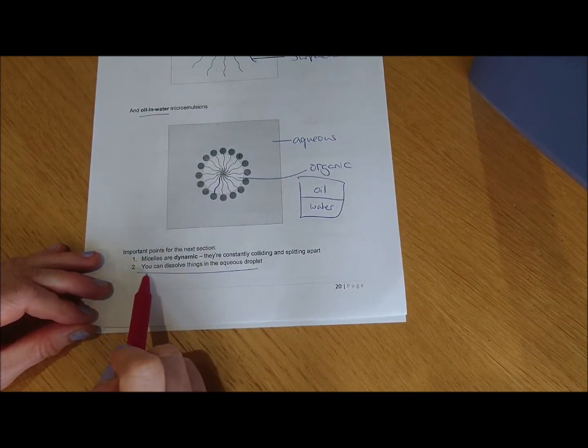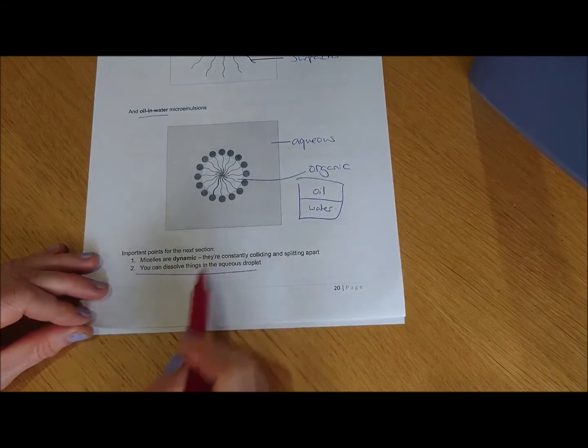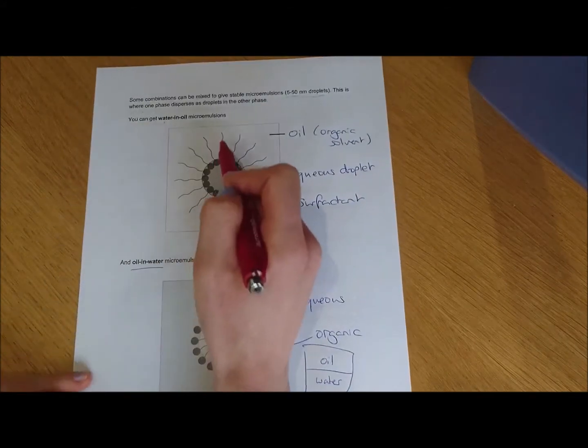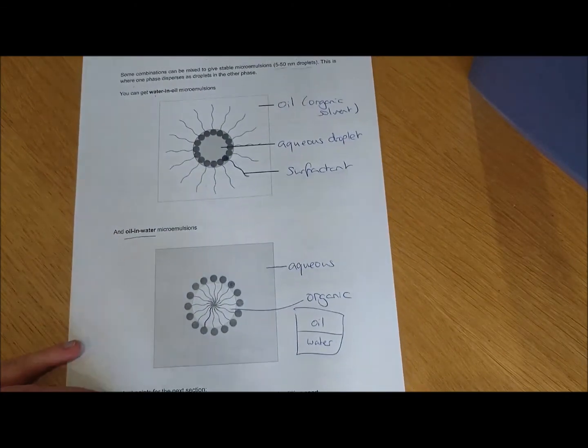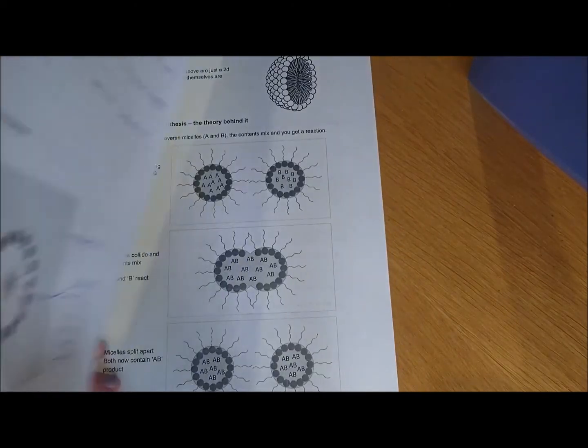The second key point on this page is that you can dissolve things in the aqueous droplet, so this micelle here, for example, that could be a droplet of water, or it could be a droplet of an aqueous solution of, for example, a metal salt.